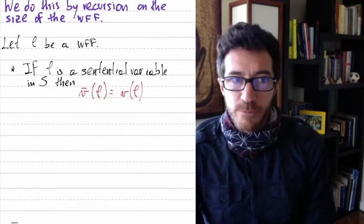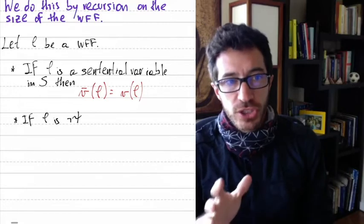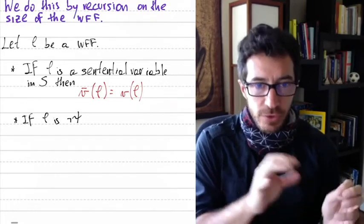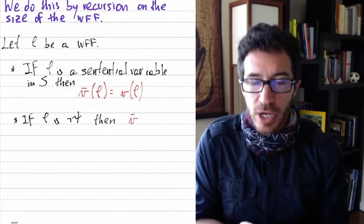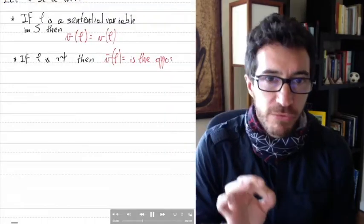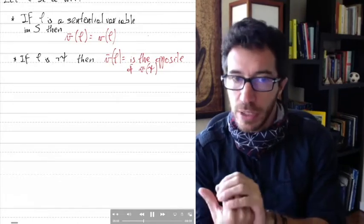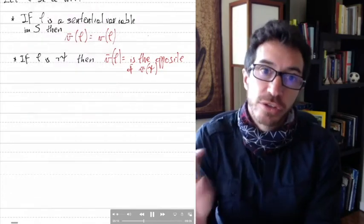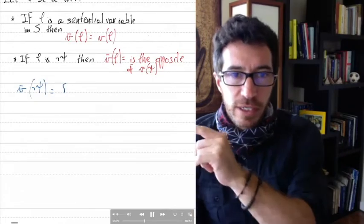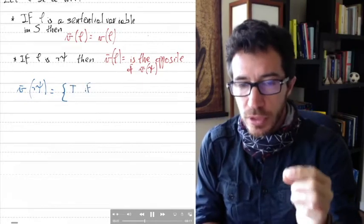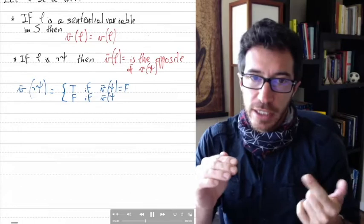Now suppose phi is of the form NOT psi, where psi is a smaller well-formed formula. Assuming we already know how to assign a truth value to psi, V-bar of phi is going to be the opposite of V-bar of psi. More formally: V-bar of NOT psi is true if V-bar of psi is false, and it is false if V-bar of psi is true — the opposite.